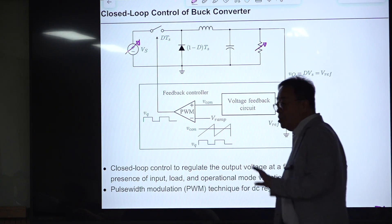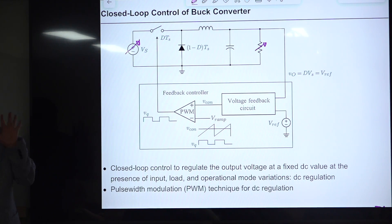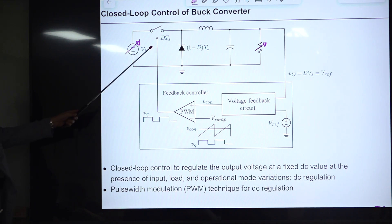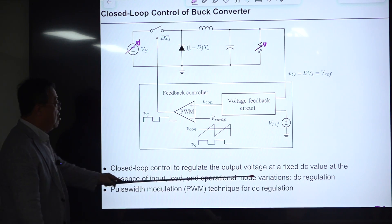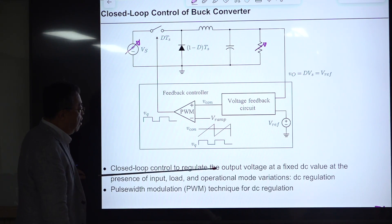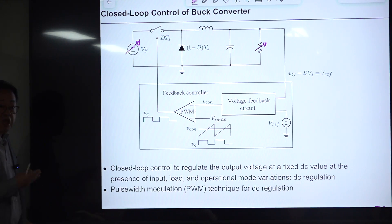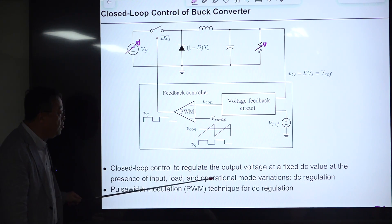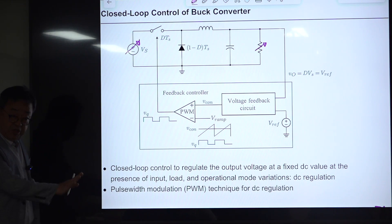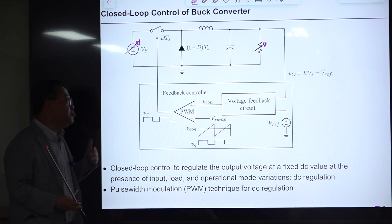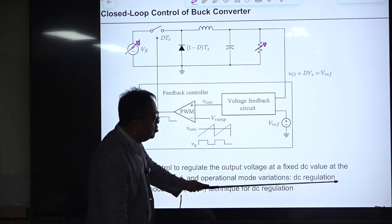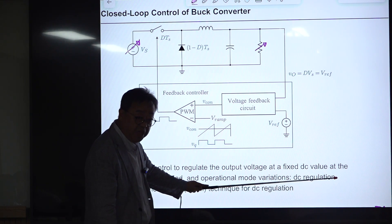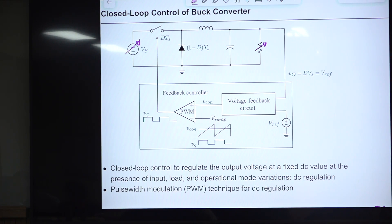DC regulation refers to closed-loop control to regulate output voltage at a fixed DC value in periodic steady-state operation — not during transients — in the presence of input voltage variation, load variation, and operational mode changes. There are two kinds: line regulation (keeping output constant when input varies) and load regulation (keeping output constant when R varies).